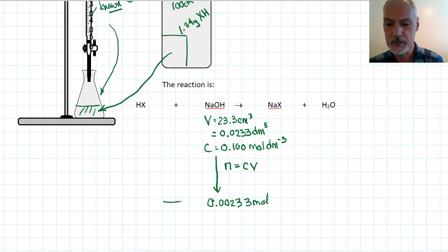Now from the reaction, we can see the ratio that exists between our unknown acid and our sodium hydroxide is 1 to 1. So therefore, I know present down here in the bottom was exactly the same number of moles, 0.00233 moles.